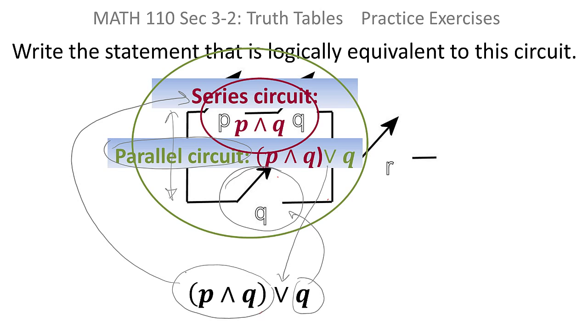So the gates in red, the P and the Q are on the same level, so they're ANDs. And then the P and Q is directly above the Q, which means those are parallel circuits and they're represented by OR.